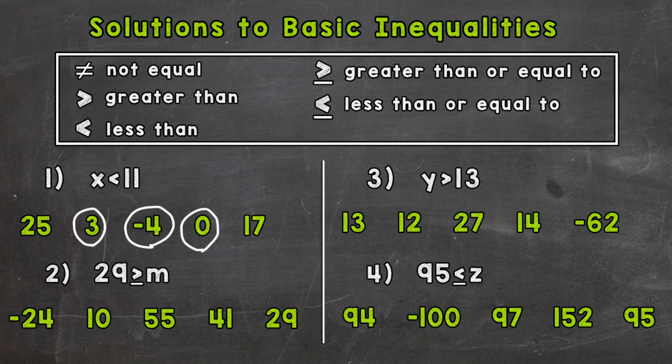On to number 2, where we have 29 is greater than or equal to m. So anything that is less than or equal to 29 would work for m, because 29 needs to be greater than or equal to that m. So negative 24, that would work, because that's less than 29. 29 is going to be greater than or equal to that negative 24. Same for 10. So let's circle those two.